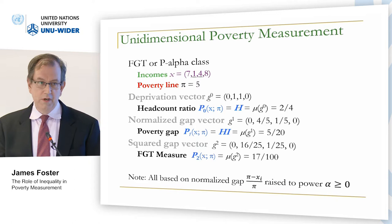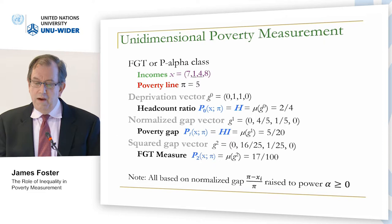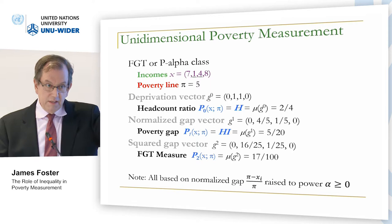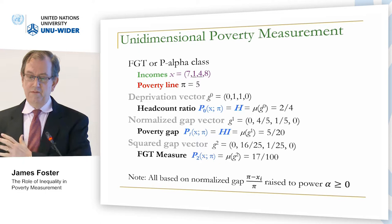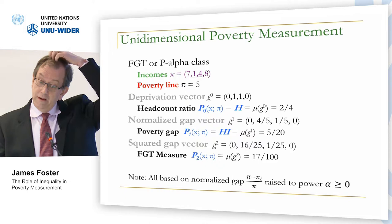Take the mean of the deprivation vector and that's the headcount ratio. For the normalized gap or poverty gap measure, look at the normalized gap vector — the poverty line minus the income level over the poverty line for each person who's poor. Take the mean of that vector and that's the poverty gap. Square those entries to get the squared gap vector; take the mean and you have the FGT squared gap measure. Notice all are based on the normalized gap raised to a power alpha.